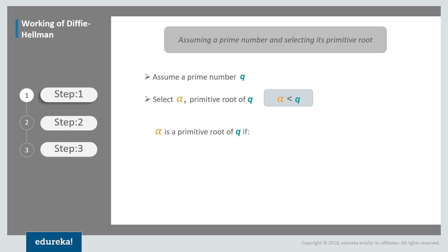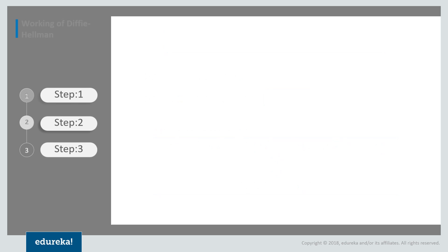Alpha is considered to be a primitive root of Q if the following series is actually followed. As you can see on the screen, the series is Alpha mod Q, Alpha square mod Q, Alpha cube mod Q, until Alpha raised to Q minus 1 modded by Q. All this should actually give you a result of 1, 2, 3, till Q minus 1. If this condition satisfies, we call this Alpha a primitive root of Q.